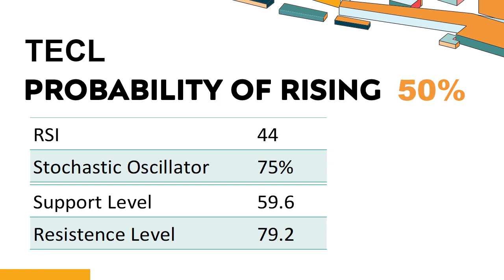Is TECL trading above or below its moving averages? TECL's 14-Day RSI value was 44. When the RSI is above 25 and below 50, it generally indicates that the stock is moderately bearish. This means that the security's price has been falling but has not yet reached oversold levels, typically considered an RSI reading of 25 or lower.